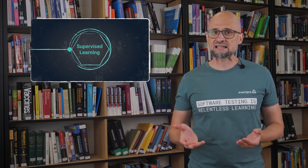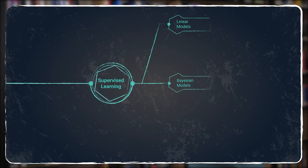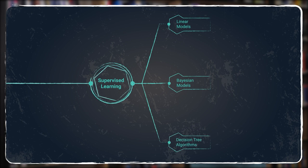The models presented in the syllabus can be divided into three groups: Linear models, Bayesian models, and decision tree algorithms. Let's look at a few examples for each group.